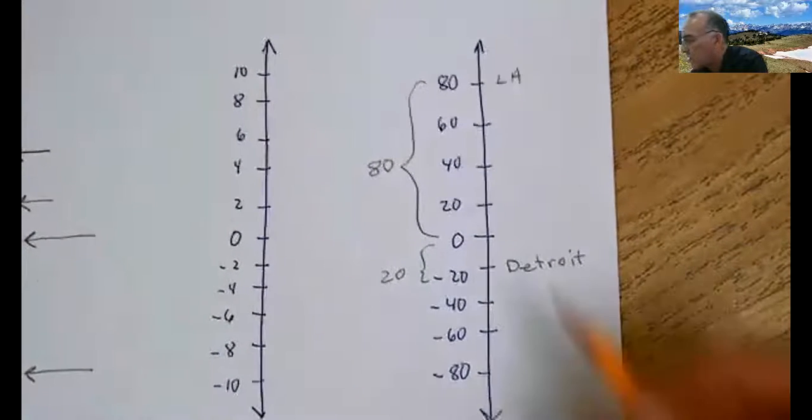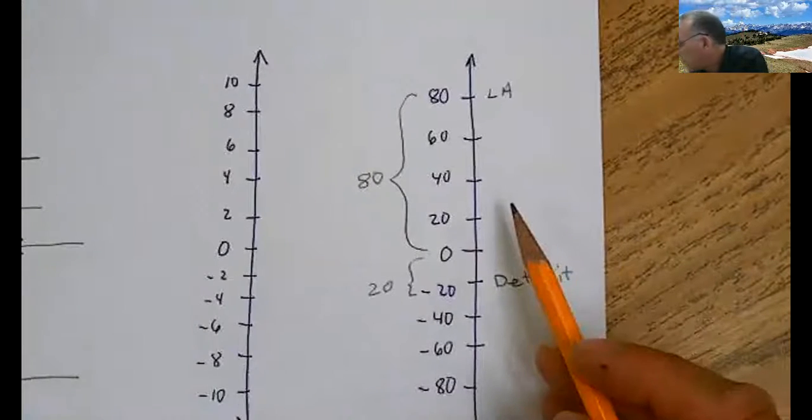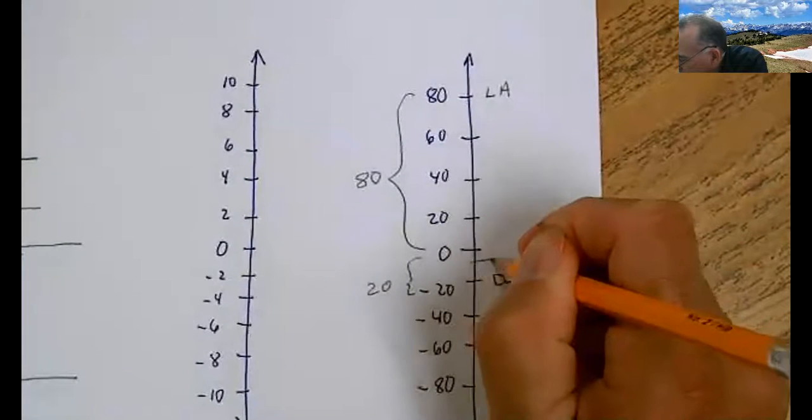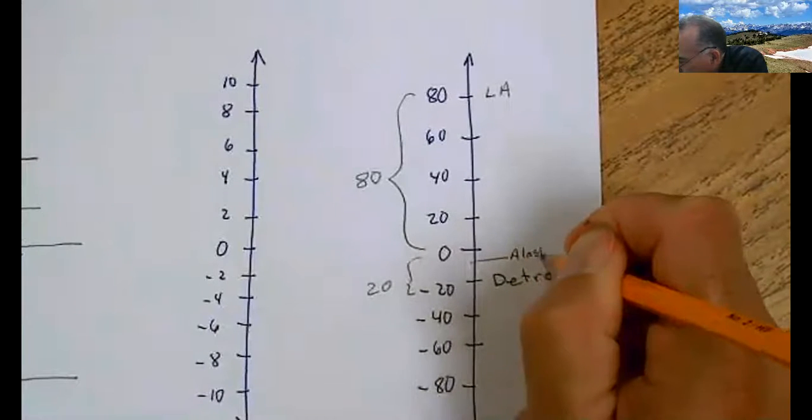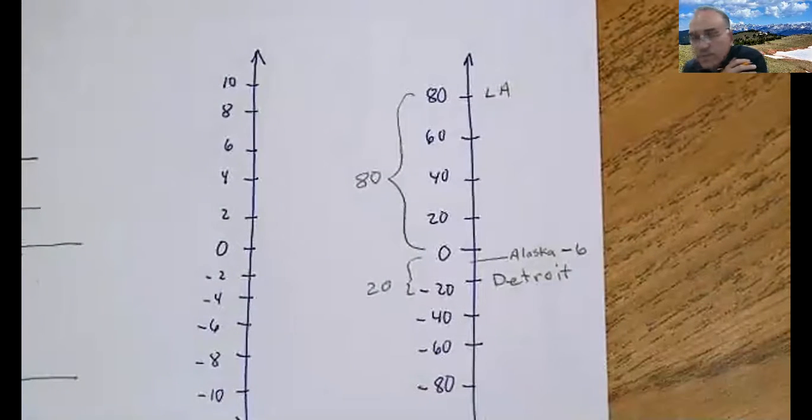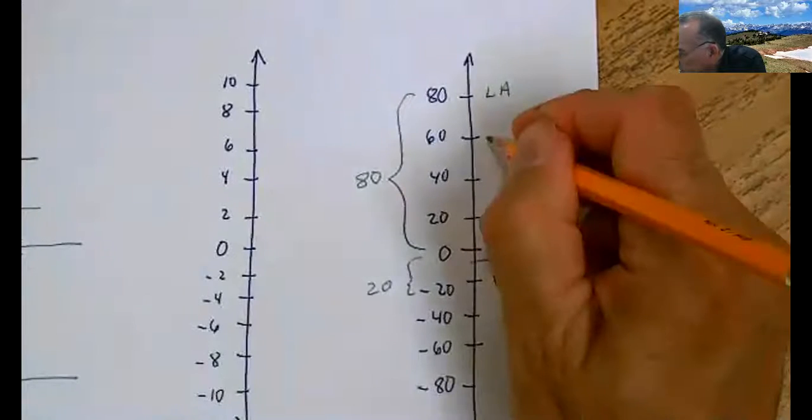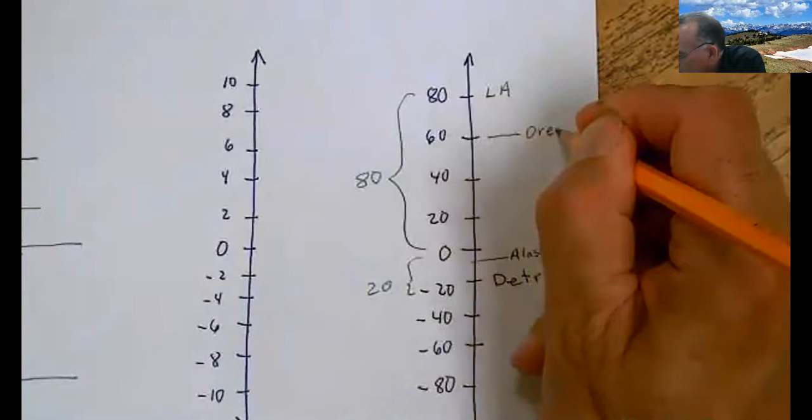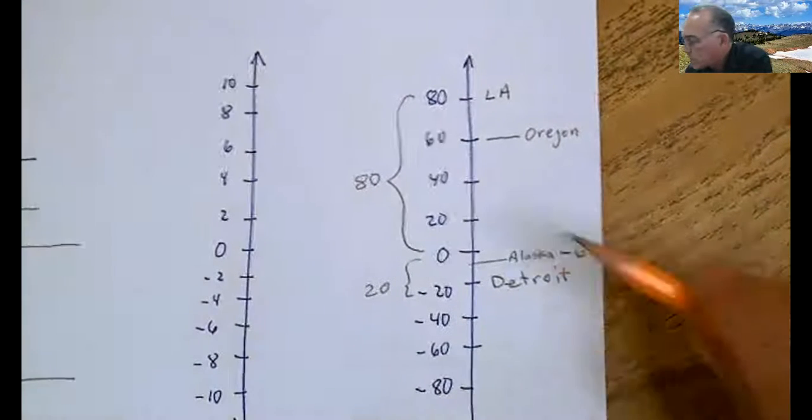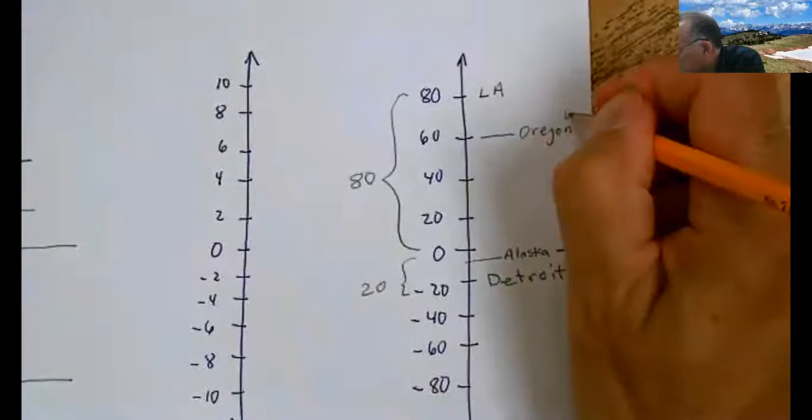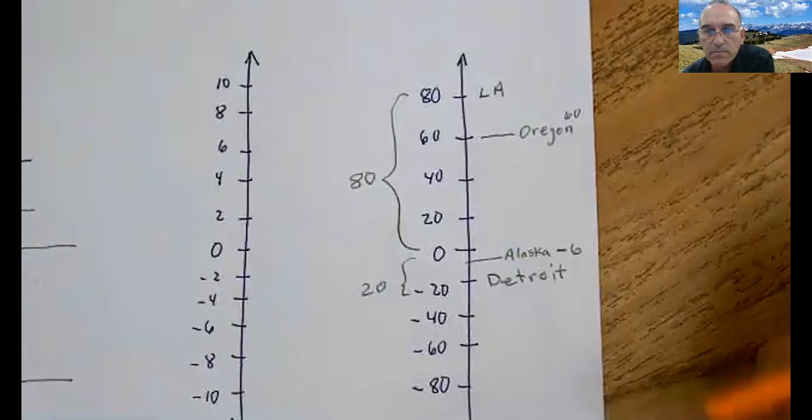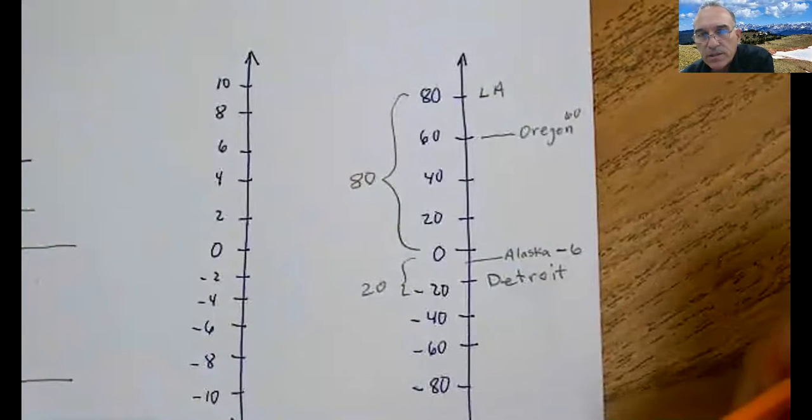Let's use the same number line. I'm going to make this a little messy here. Let's say Alaska. Alaska is minus six. Does that look like minus six? And in Oregon, it is 60. How much colder is it in Alaska? How much colder is it in Alaska compared to Oregon? It is 66 degrees colder.